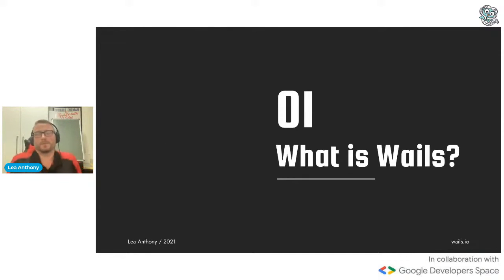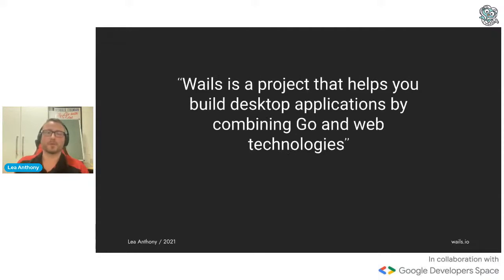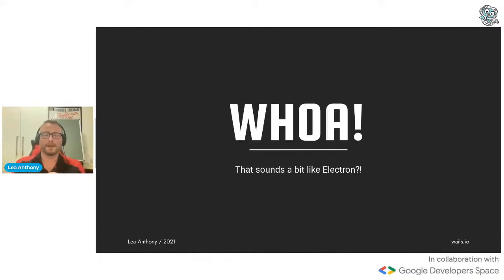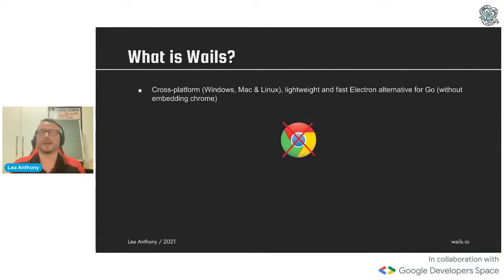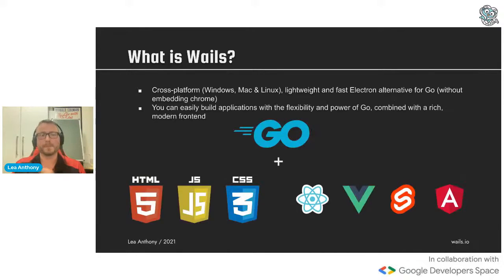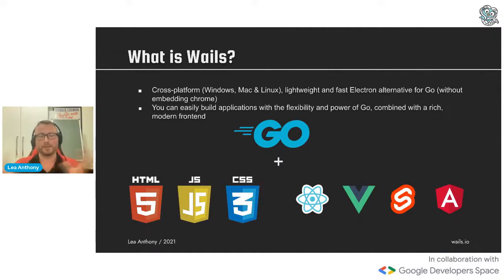So first of all, what is Wails? Wails is a project that helps you build desktop applications by combining Go and web technologies. Doesn't that sound a bit like Electron? Well, yes, it is a little bit like Electron but a little bit different. It's a cross-platform, lightweight, and fast Electron alternative for Go, but it doesn't embed Chrome, which has a lot of benefits. You can easily build applications with the flexibility and power of Go combined with a rich modern front end.